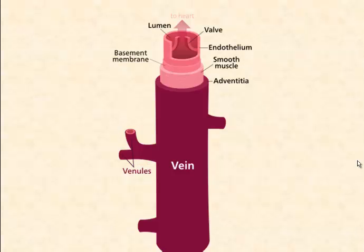Venules are tributaries to veins. Blood flows out of the capillary beds and into venules. Venules are thinner-walled than arterioles. They accommodate blood leaving the capillary bed at much lower pressure than when it entered the capillary bed.